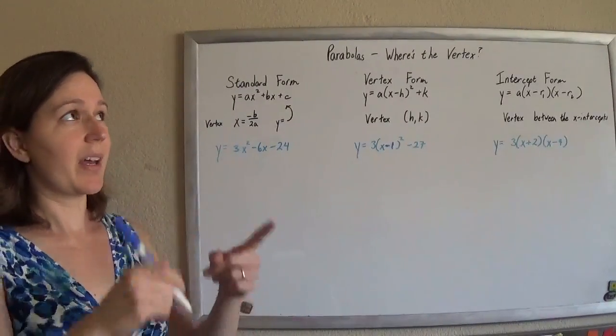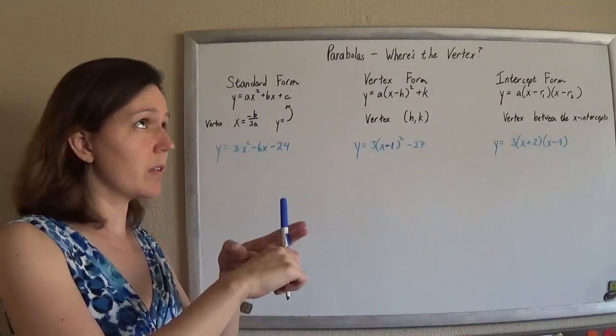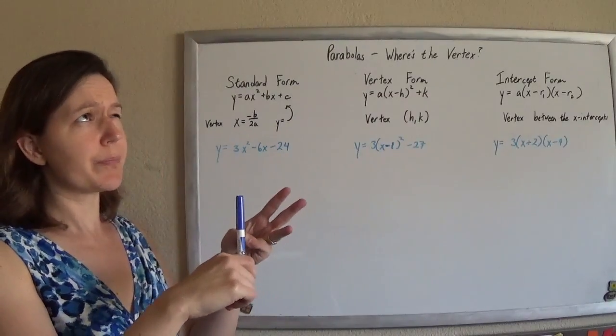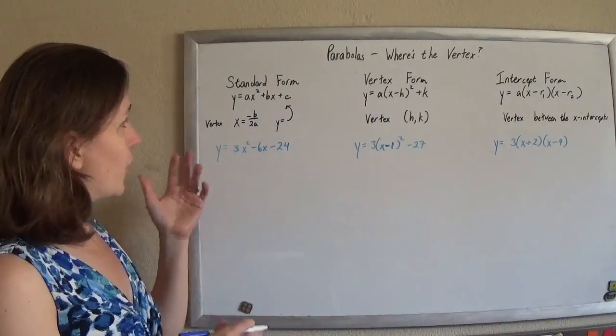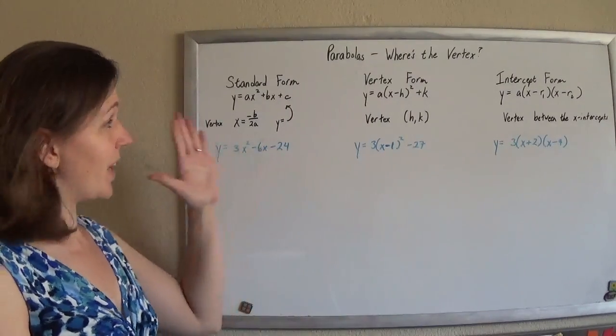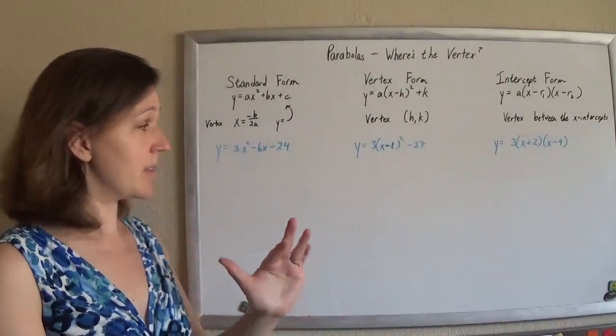Just like we really killed lines and had a standard form, point-slope form, and slope-intercept form, we're going to really kill parabolas. We're going to have three forms that you're going to see parabolas in.